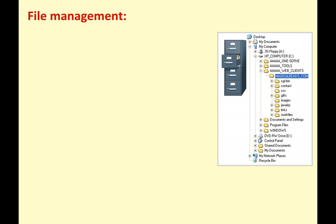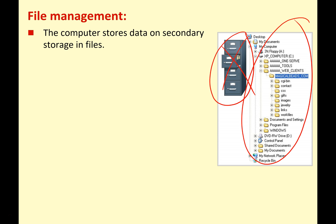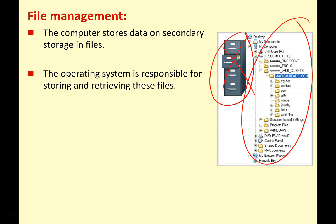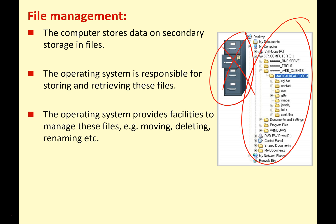Moving on, we're going to look at another important job of the operating system: file management. We don't mean physical files — we mean electronic files and folders. The computer stores data on secondary storage devices in files held in folders. The operating system is responsible for storing and retrieving those files, and has to provide facilities to manage them.